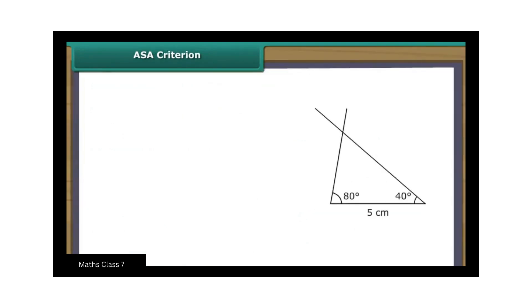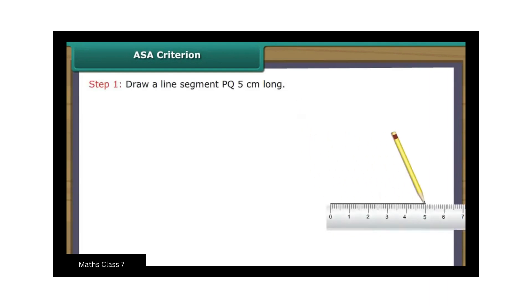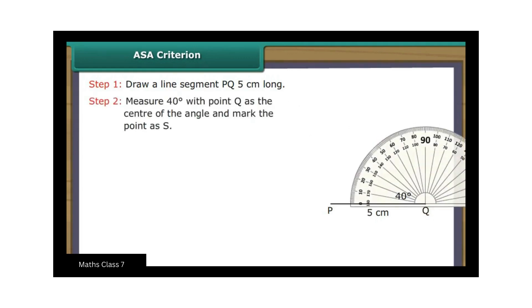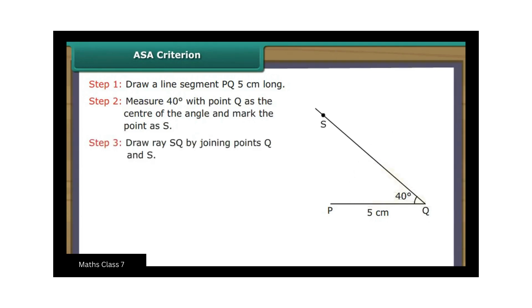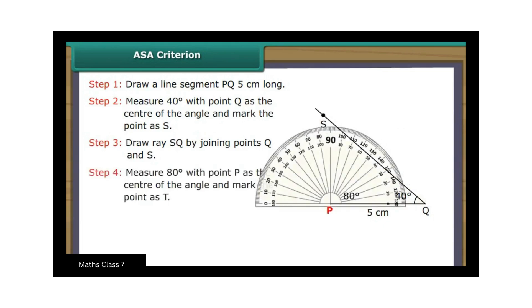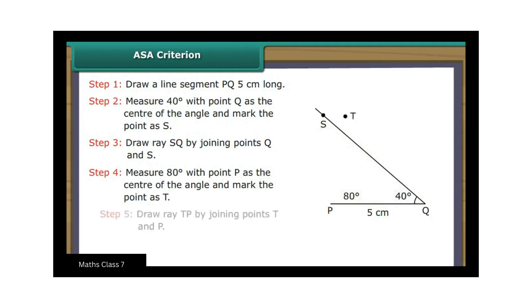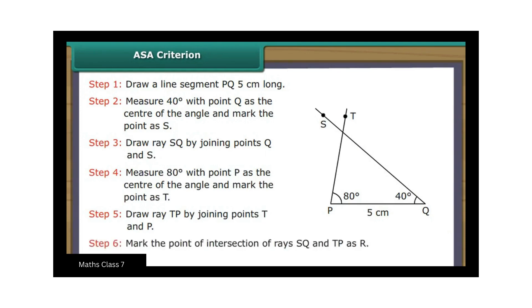ASA Criterion. Let us now draw a triangle, two of whose angles measure 40 degrees and 80 degrees and the side between them measures 5 cm. Draw a line segment PQ 5 cm long. Measure 40 degrees with point Q as the center of the angle and mark the point as S. Draw ray QS. Measure 80 degrees with point P as the center of the angle and mark the point as T. Draw ray TP. Mark the point of intersection of rays QS and TP as R. Triangle PQR with two angles of 40 degrees and 80 degrees and the side between them as 5 cm is constructed.